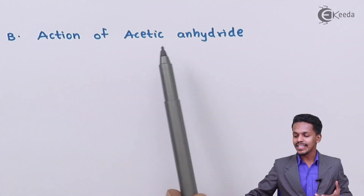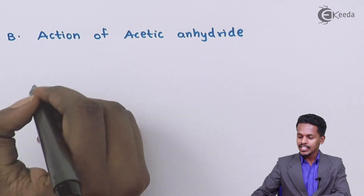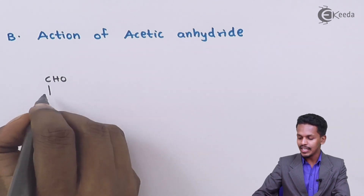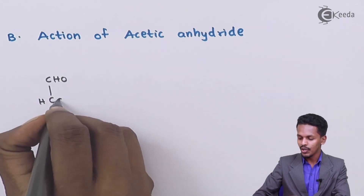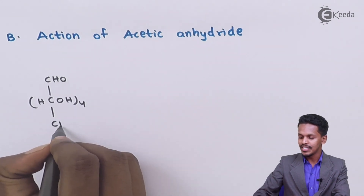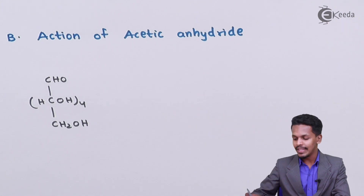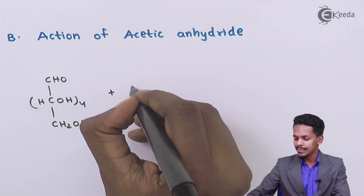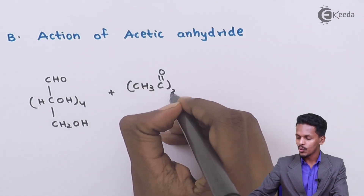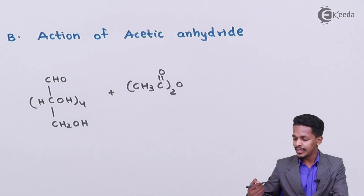The next reaction is the action of acetic anhydride on glucose. Suppose we draw the structure of glucose as CHO, CHOH four times, and CH2OH at the bottom. If this glucose is treated with acetic anhydride, which is (CH3CO)2O — two CH3C=O groups linked through an oxygen atom.